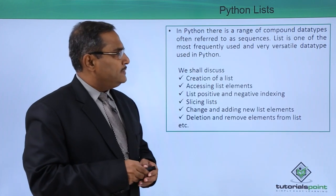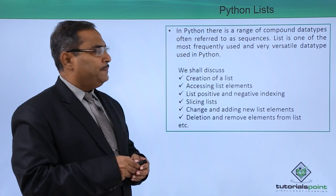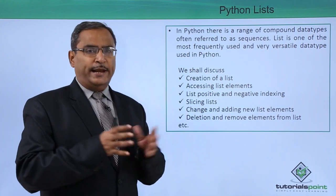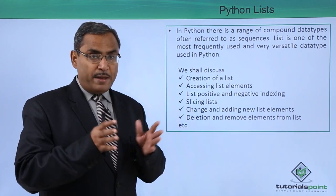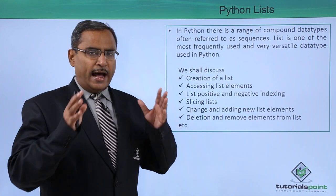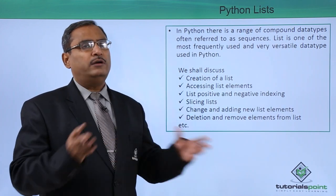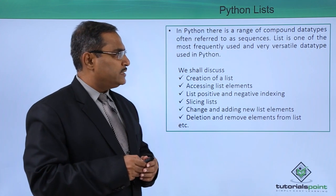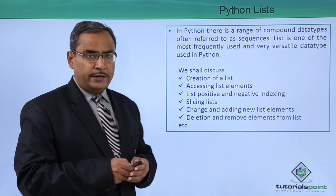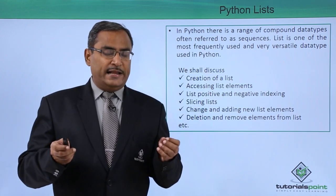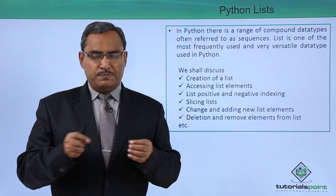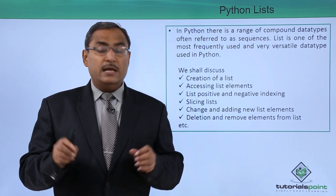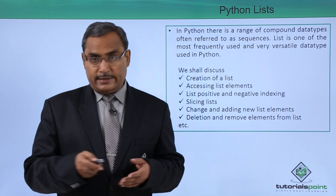In Python, there is a range of compound data types often referred to as a sequence. A sequence will have a range of different data type members — those members may have the same or different data types. List is one of the most frequently used and very versatile data types in Python. We usually define lists by enclosing the members separated by commas within square brackets, and we can also go for nested lists.